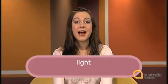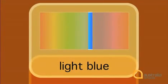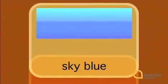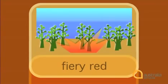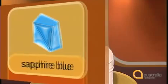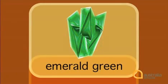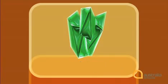We talk about shades of colour in different ways, most commonly by using light and dark — for example, light blue, dark blue. Or sometimes we refer to nature: sky blue, forest green, fiery red. We also use precious stones to describe colour: sapphire blue, emerald green, ruby red.